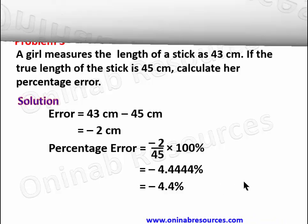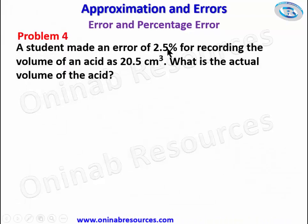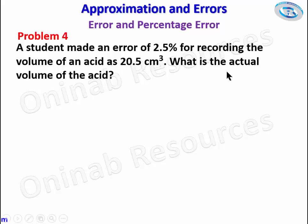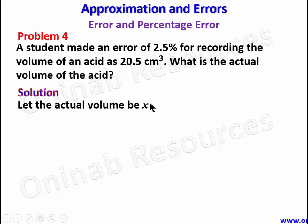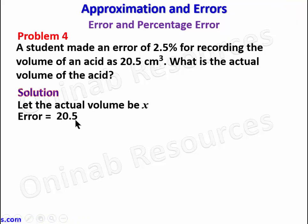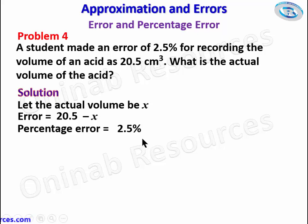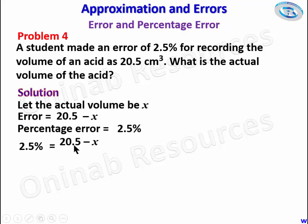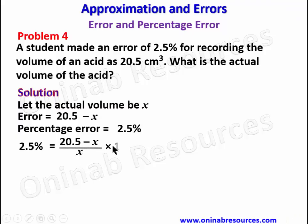We go to problem four. A student made an error of 2.5 percent in recording the volume of an acid as 20.5 cubic centimeters. What is the actual volume of the acid? Let the actual volume be x. The error is the measured value (20.5) minus the actual value (x). We are given the percentage error as 2.5 percent, so: 2.5 percent equals (20.5 minus x) over x, times 100 percent.